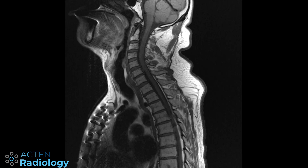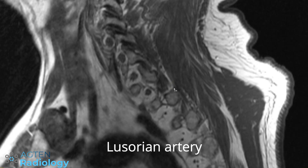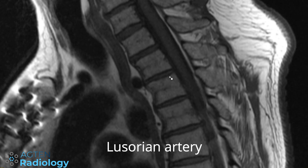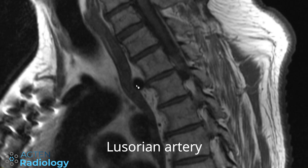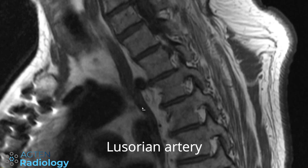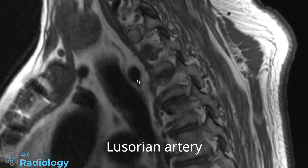This next incidental finding is a vascular anomaly you can sometimes see on your C-spine or thoracic spine MRIs. It's an aberrant right subclavian artery, also known as a lusorian artery. You can see here a very large vessel running behind the oesophagus from the aortic arch to the right side.